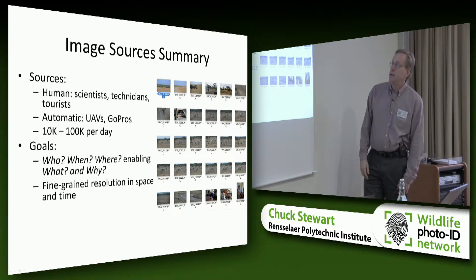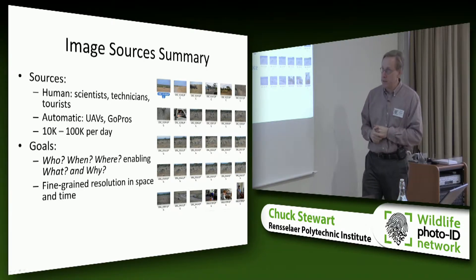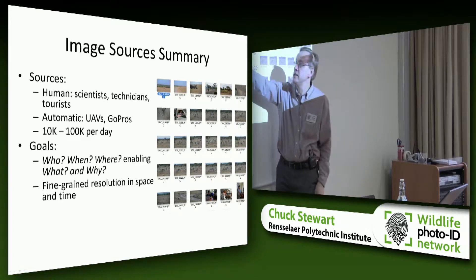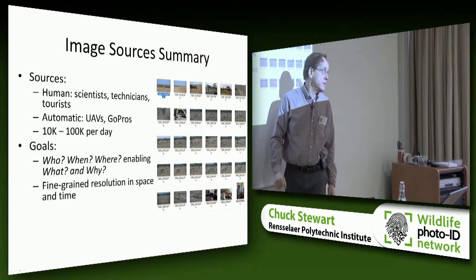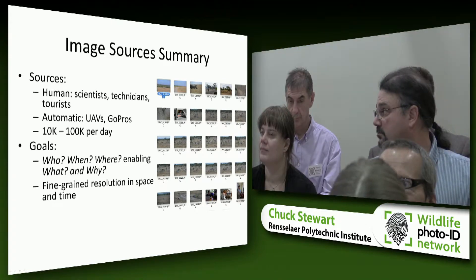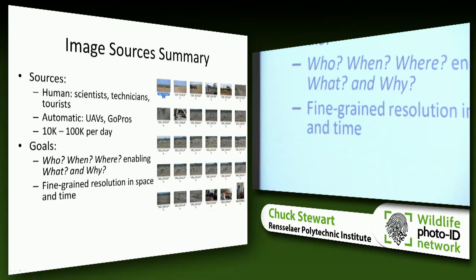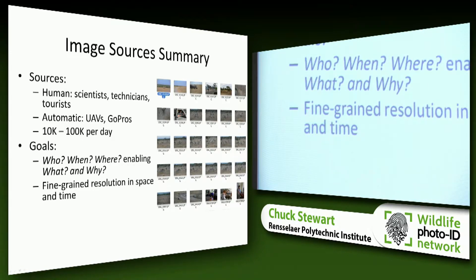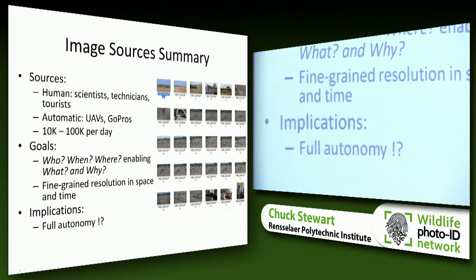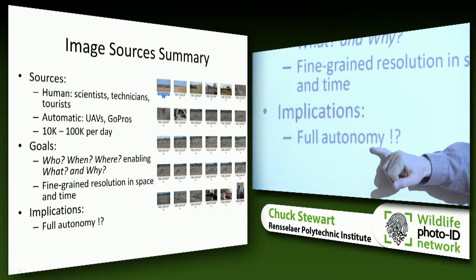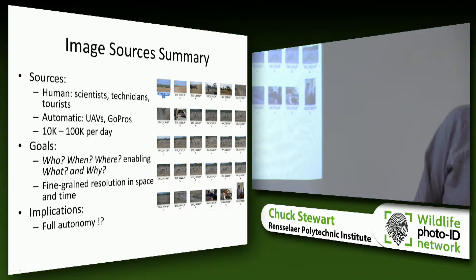Dan came up with a wonderful phrase: our software determines who the animals are, when and where they're active — so conservationists and ecologists can determine what they're doing and why. The goal is very fine-grained resolution in space and time. One key question is whether we can push toward full autonomy — 90%, 95%, or 99% — in these identification algorithms.